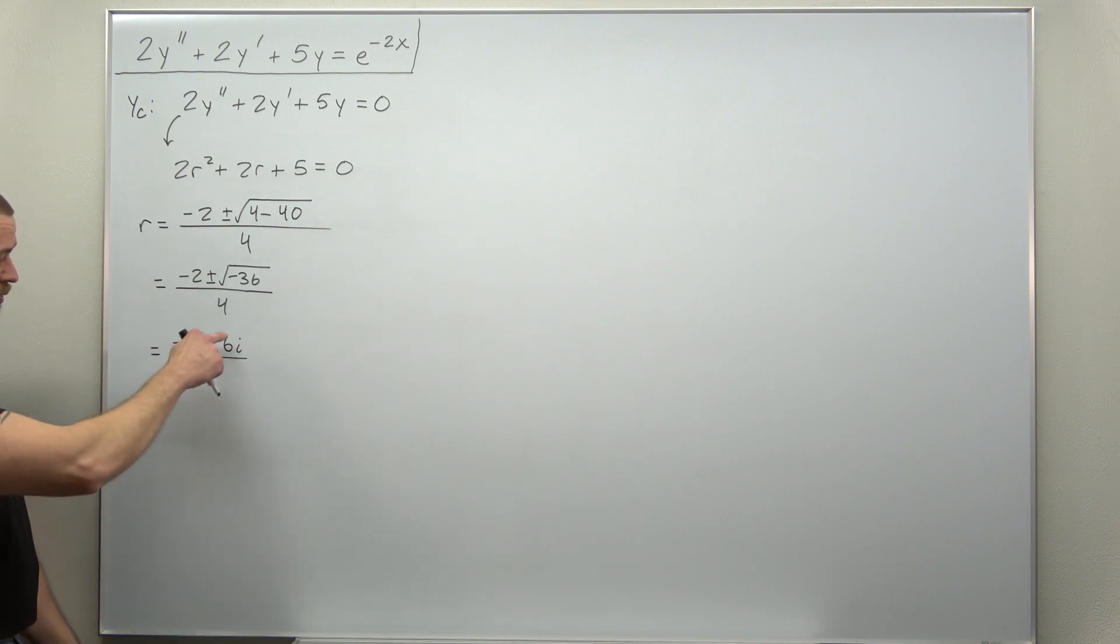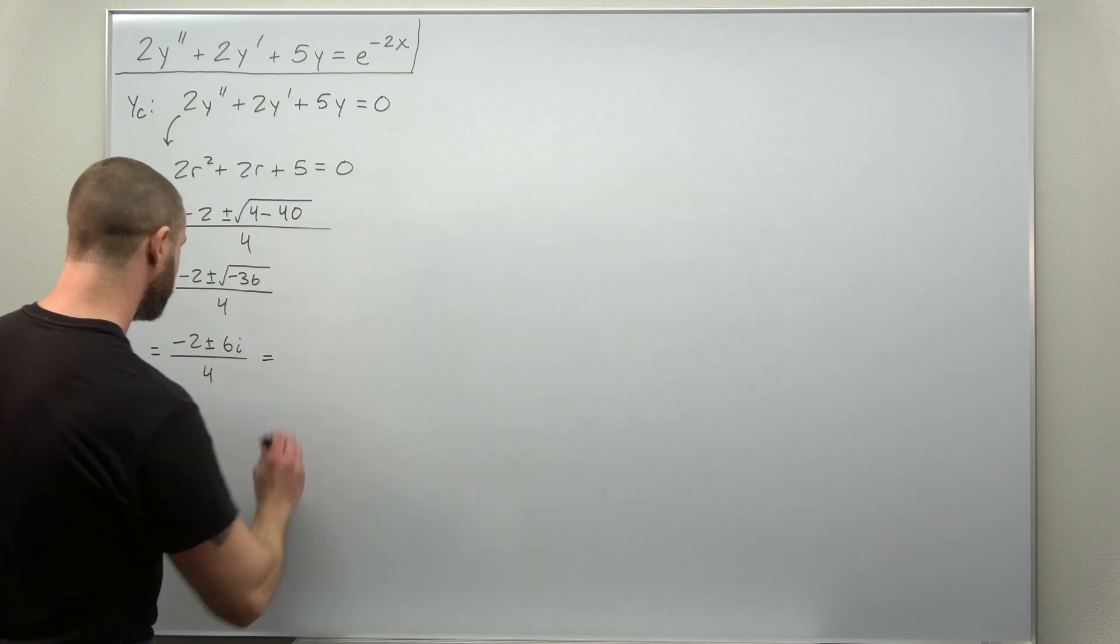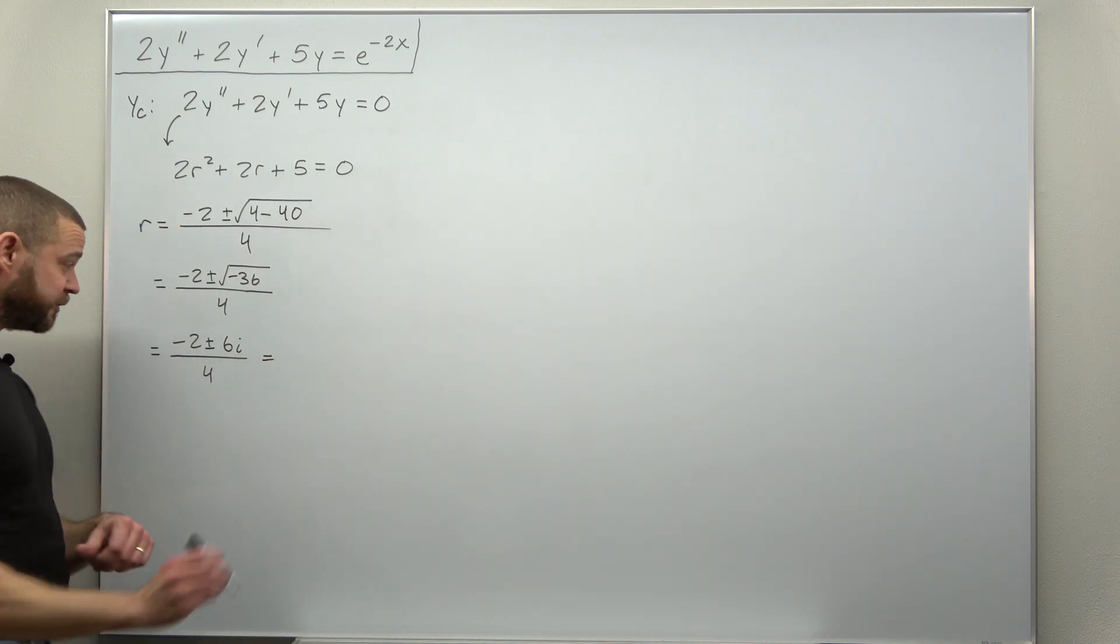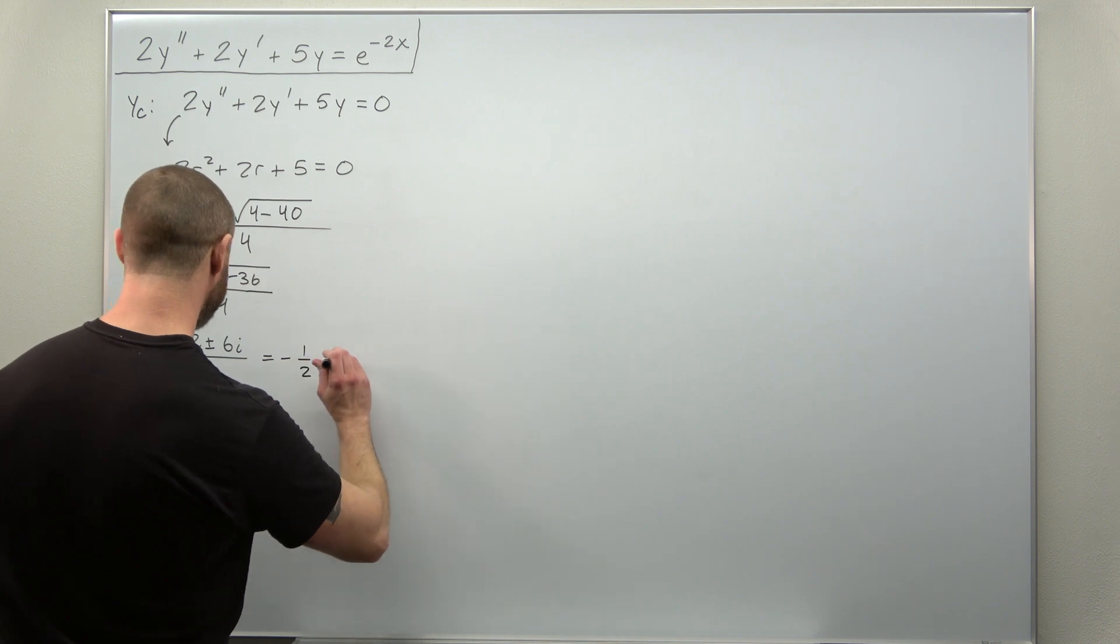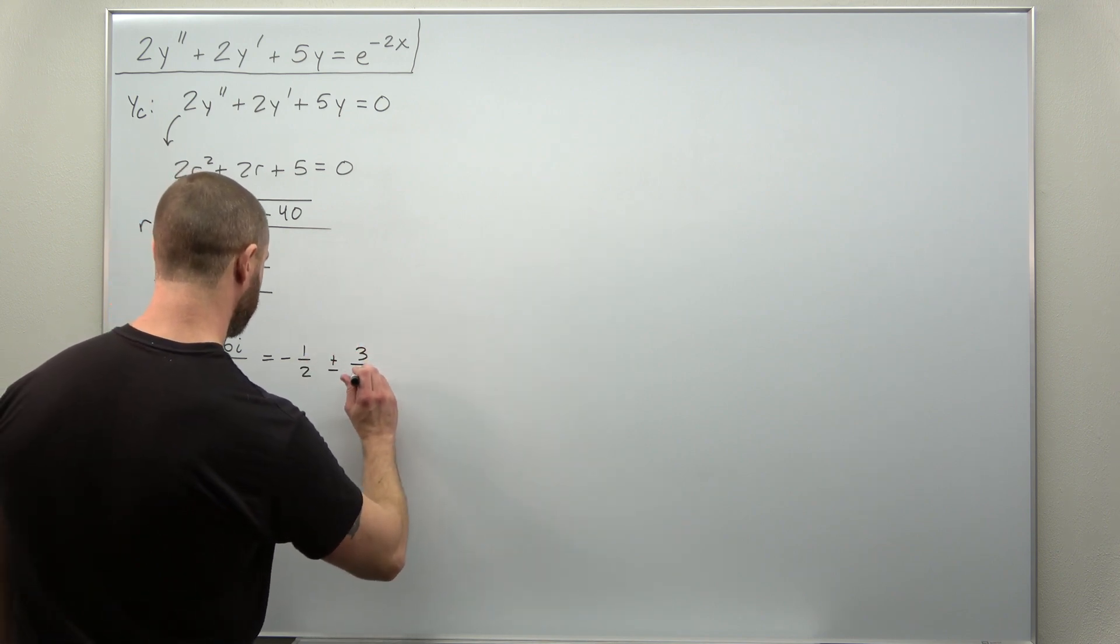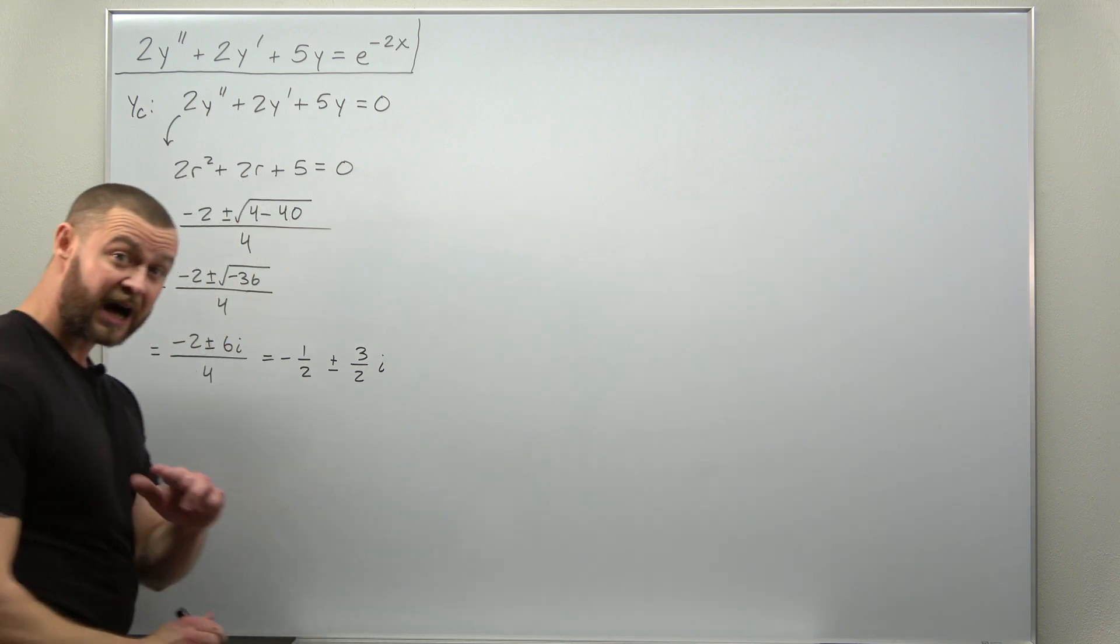And notice 2, 6, and 4 all have factors of 2 in them. So you can divide the factor of 2 out and write your complex roots as negative 1 half plus or minus 3 halves i.